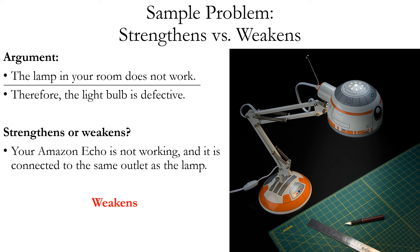It weakens the argument. The argument concludes the lamp doesn't work because the light bulb is defective. However, if another electronic device on the same outlet is also not working, that increases the probability the lamp isn't receiving electricity at all — you may have a blown fuse. The additional information doesn't guarantee the conclusion is false, since the Amazon Echo could be defective for an unrelated reason, but it does make the conclusion less likely, so it weakens the argument.